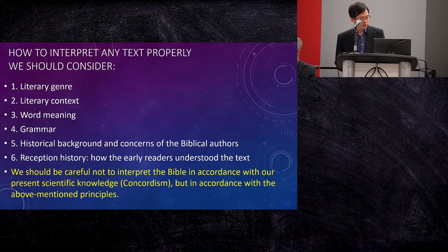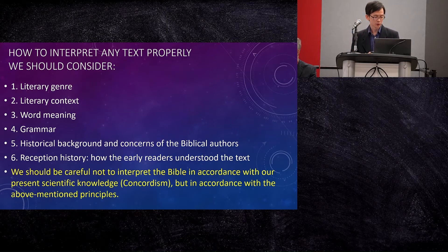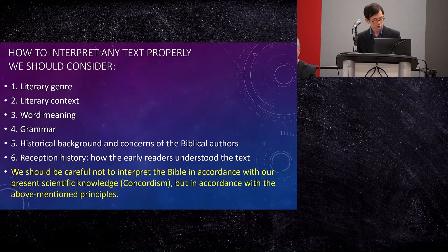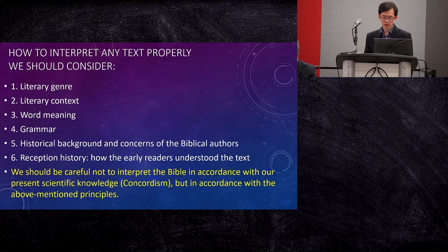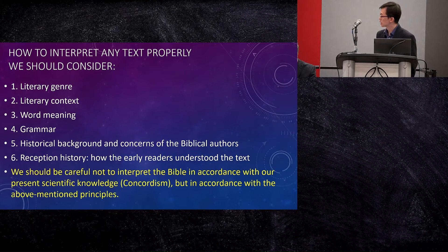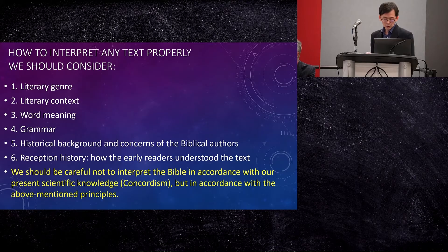As for the biblical text, how do we interpret it properly? We need to consider the following factors: the literary genre, the context, the meaning of the words in the original language, the grammar, the historical background and concerns of the biblical authors, as well as the reception history — how the early readers understood the text. We should be careful not to interpret the Bible in accordance with our present scientific knowledge, which would be the area of concordism, but rather in accordance with these above-mentioned principles.